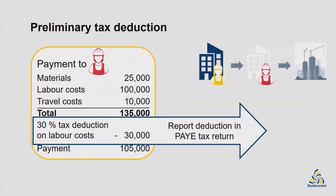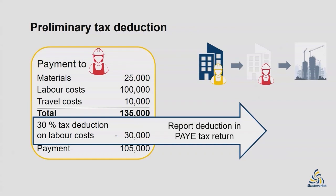Remember the possibility to apply for an exemption decision from the Swedish Tax Agency, which means that the company that pays the compensation does not have to make a preliminary tax deduction, even though the subcontractor does not have F-tax approval. Now you know why it is important to have F-tax approval: it determines who is responsible for paying preliminary tax to the Swedish Tax Agency.